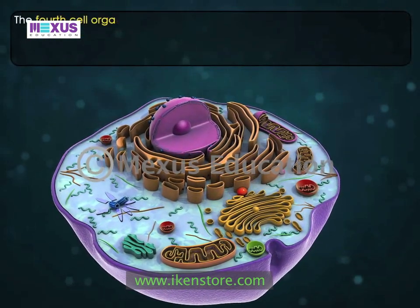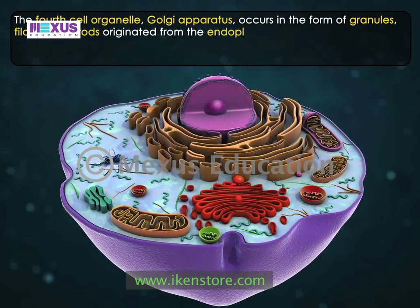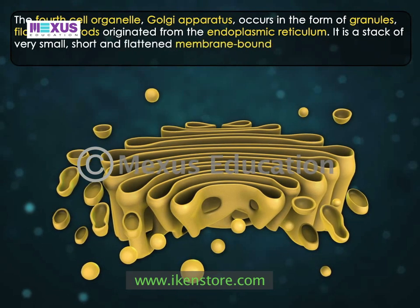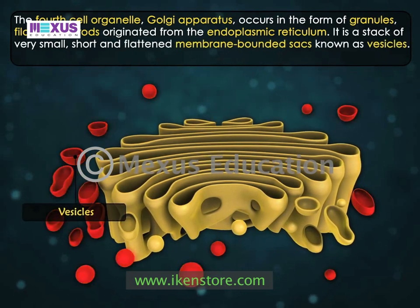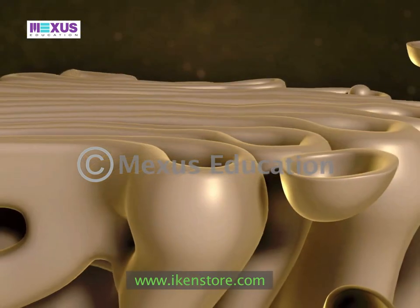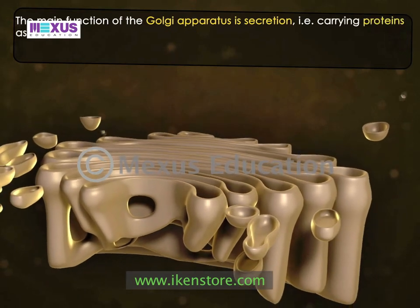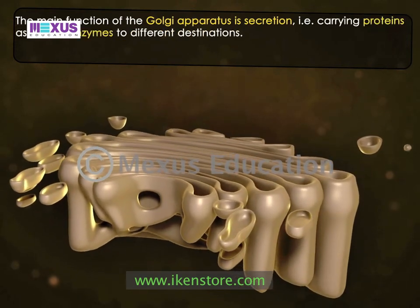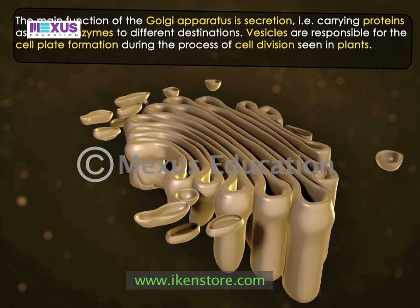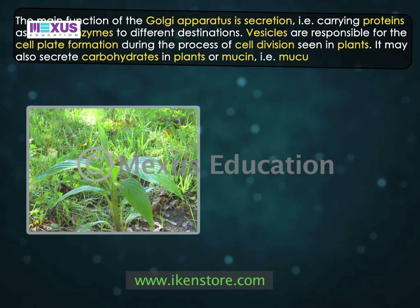The fourth cell organelle, Golgi apparatus, occurs in the form of granules, filaments, or rods originated from the endoplasmic reticulum. It is a stack of very small, short, and flattened membrane-bound sacs known as vesicles, which are of varied shapes and are generally located near the nucleus. The main function of the Golgi apparatus is secretion — that is, carrying proteins as well as enzymes to different destinations. Vesicles are responsible for the cell plate formation during the process of cell division seen in plants. It may also secrete carbohydrates in plants or mucin, that is, mucus in animals.